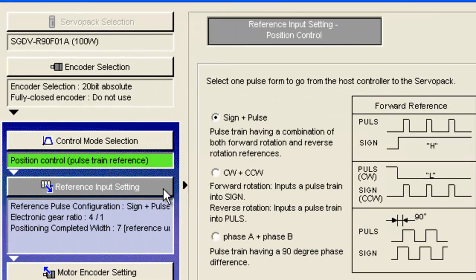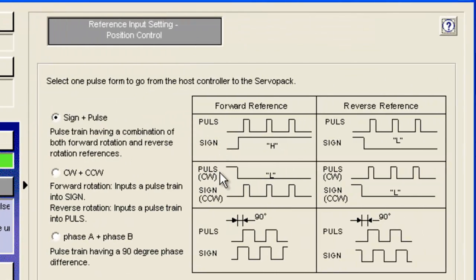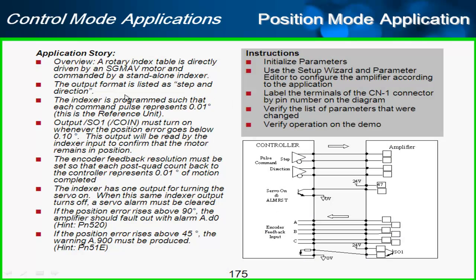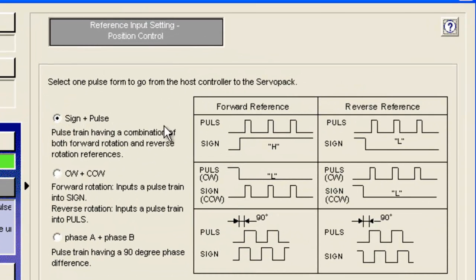Now for the reference input setting, we have these different formats that the controller can send its pulses. We have said that the output format is listed as step and direction. So I'm going to use sign and pulse, which is equivalent to step and direction. You've got pulses on one channel and high or low for direction on the other channel. That's likely to be the most common format for controllers operating in position mode.